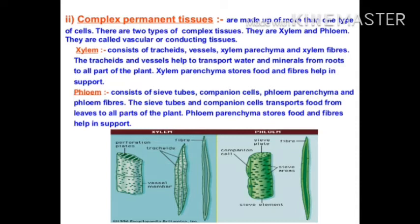The tracheids and vessels help to transport water and minerals from the root to all parts of the plant. Xylem parenchyma stores food and fibers help in support. Phloem consists of sieve tubes, companion cells, phloem parenchyma and phloem fibers. The sieve tubes and companion cells transport food from leaves to all parts of the plant. Phloem parenchyma stores food and fibers help in support.